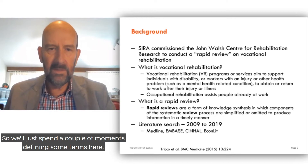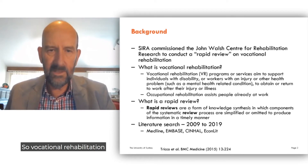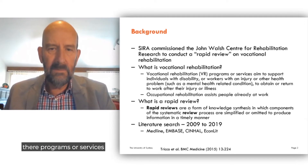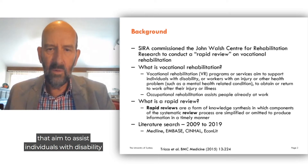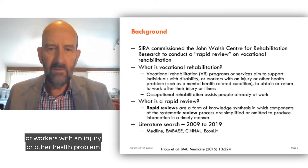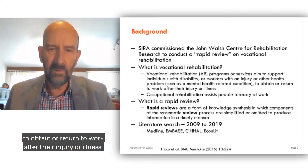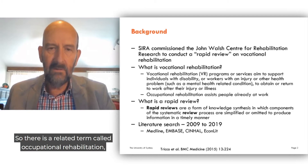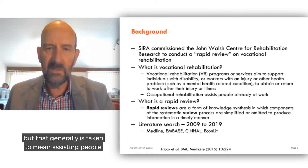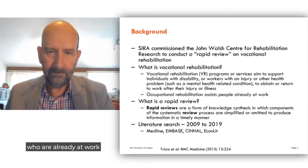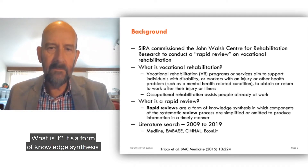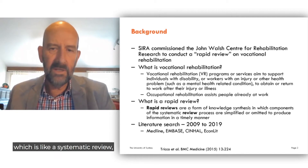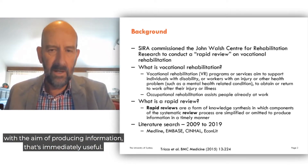So we'll just spend a couple of moments defining some terms. Vocational rehabilitation — these are programs or services that aim to assist individuals with disability or workers with an injury or other health problem to obtain or return to work after their injury or illness. There is a related term called occupational rehabilitation, but that generally is taken to mean assisting people who are already at work. A rapid review — it's a form of knowledge synthesis, which is like a systematic review, but with simpler methodology, with the aim of producing information that's immediately useful.